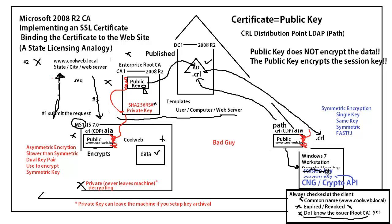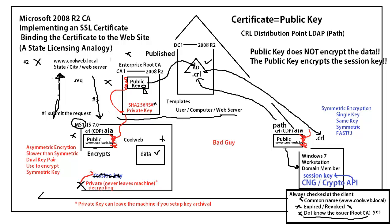So we take the public key, we encrypt the session key with the public key embedded in the certificate, and we send the session key across the wire. The bad guy can't do anything because he doesn't have the private key to decrypt the session key. The session key lands on the server — the recipient — and we're going to use the private key that's mathematically bound to the public key that originally encrypted the session key. We decrypt the session key using the private key on the server, and now the same key lives on both sides.